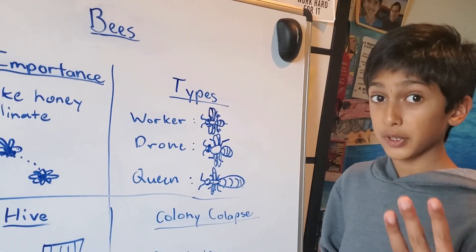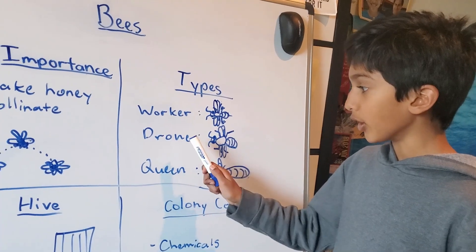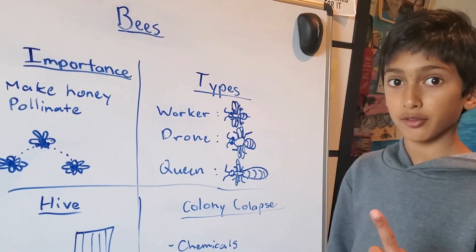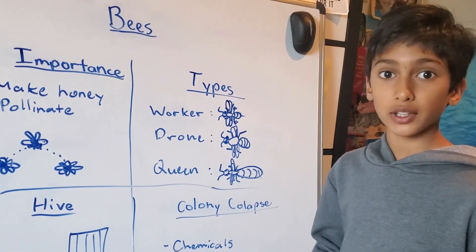There are three types of bees: the worker, the drone, and the queen. There's only one queen per hive. The queen's job is to lay eggs.